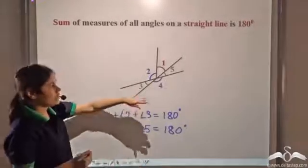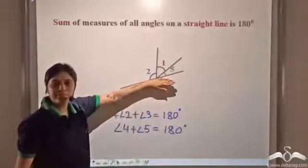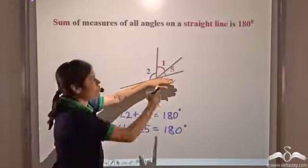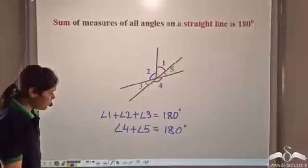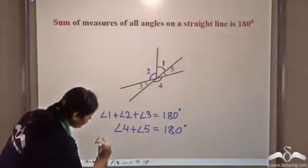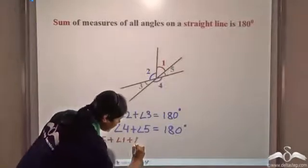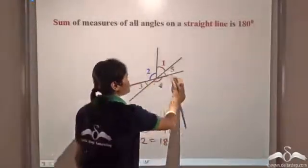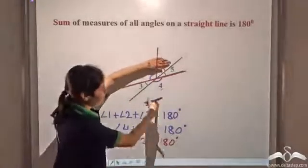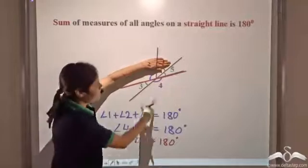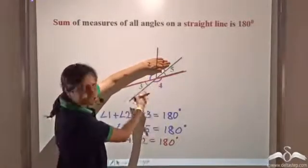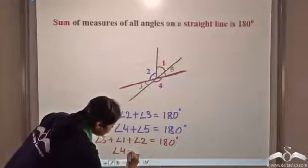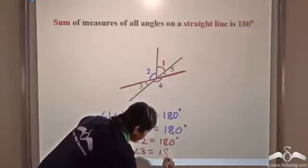Now, there is one more straight line. This is also a straight line. So, angles on this straight line will also add up to 180 degrees. We have angle five, angle one, angle two. So, angle five plus angle one plus angle two is equal to 180 degrees. On the other side, we have angle four and angle three. These form a linear pair because they are adjacent and the non-common arms lie on a straight line. So, angle four plus angle three is equal to 180 degrees.